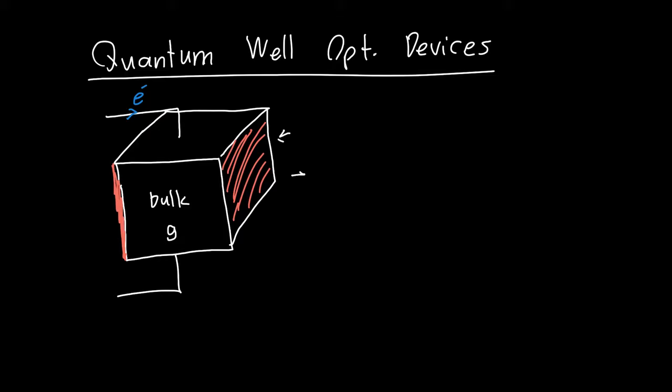But this is the beast that we've been dealing with up to this point. It turns out that for reasons we'll get into, it's actually way more efficient to use, and virtually all devices now use this instead of just a bulk region, to have quantum wells.